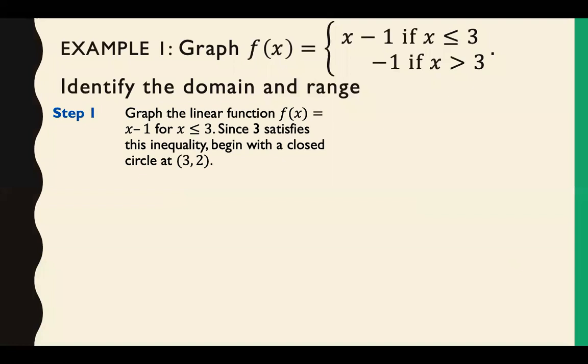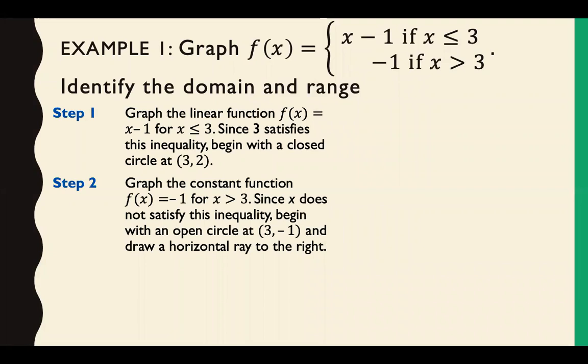So to start that off, we would graph f of x equals x minus 1 for x is less than or equal to 3. And since 3 satisfies this inequality, meaning we exist at x equals 3, we would put a closed circle at 3, 2. For step 2, we're going to graph the constant function f of x equals negative 1 for x greater than 3. And since this has a less than symbol, 3 does not exist for us at this point, so we're going to put an open circle.